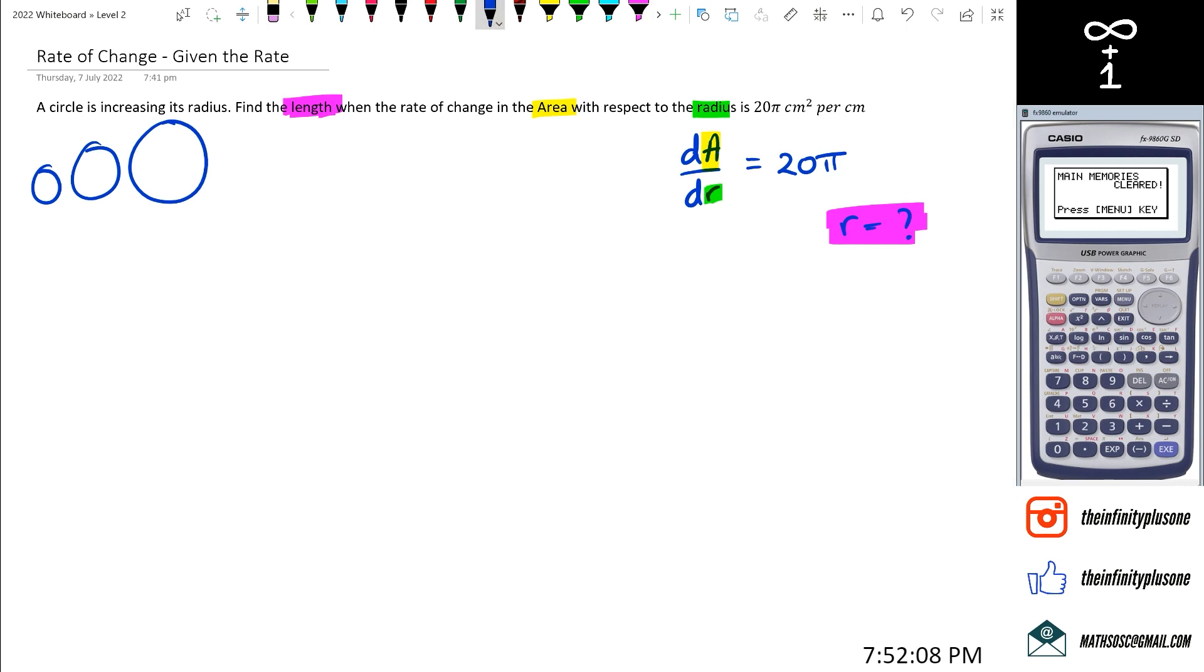So if you think about it, our equation of area of circle is actually pi r squared. So this is what pi r squared is. So we can differentiate this. So we're going to get dA dr is equal to 2 pi r. And as you can see now,